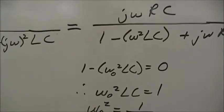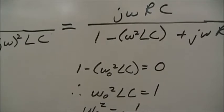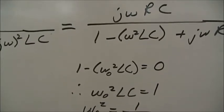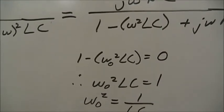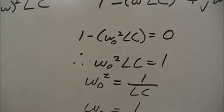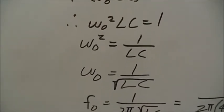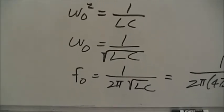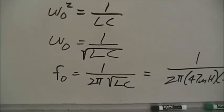Now the resonant frequency is defined when the real term goes to 0, which is 1 minus ω²LC. Remember the j² becomes minus 1. Is equal to 0, which means ω²LC equals 1, which leads to ω² equals 1 over LC. ω₀ then is 1 over √LC. And F₀, or the resonant frequency in Hertz, is 1 over 2π√LC.